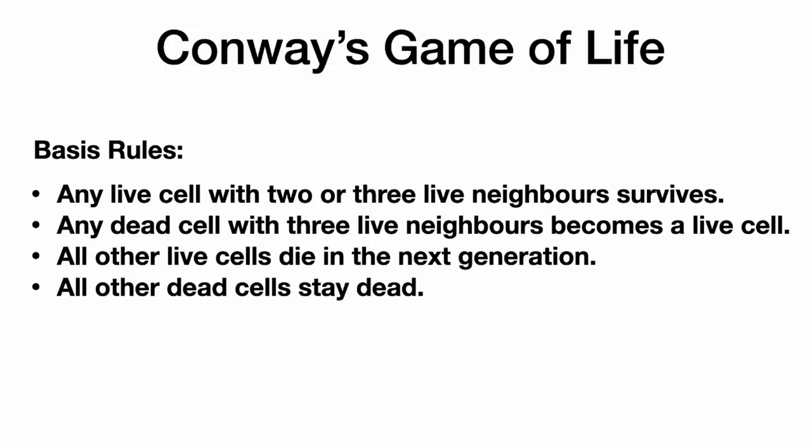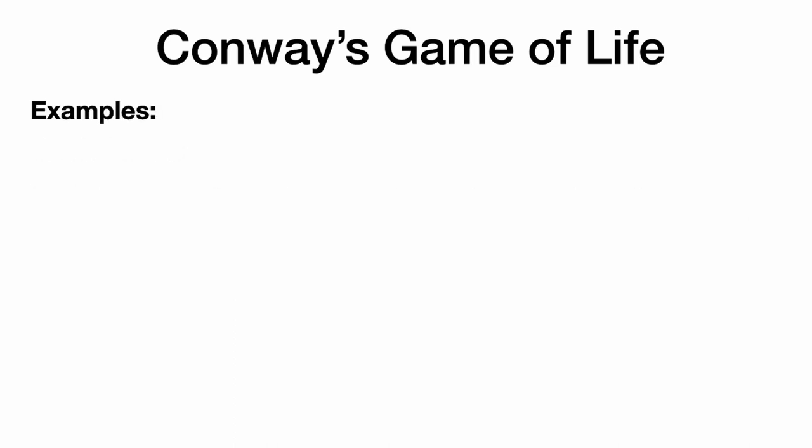The Game of Life has really only three rules regarding a particular cell. The cell looks at all its neighbors — there are eight of them: three above, three below, one left, and one right. Based on the number of cells that are alive or dead around it, we work out whether that cell stays alive or dies. Any live cell with two or three live neighbors always survives. Any dead cell with three live neighbors becomes a live cell. All other live cells die — either overcrowded or not enough to sustain life. Any other dead cells stay dead.